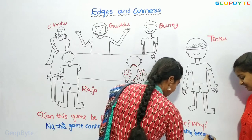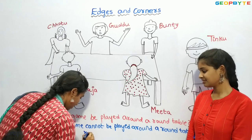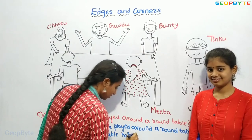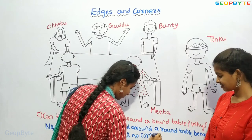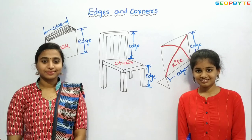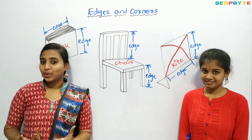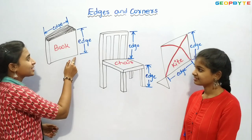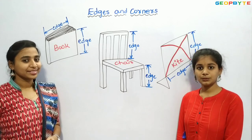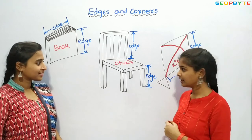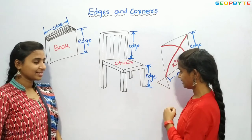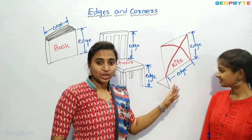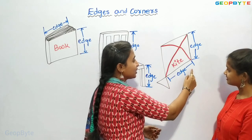Let us see the next question. For example, this is a book — it has a straight edge and a straight edge. The next one is a chair — it is also having straight edges. This is a kite — it is also having straight edges.